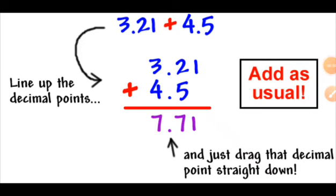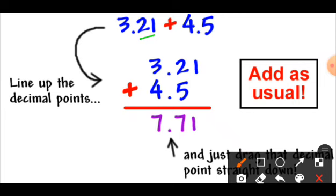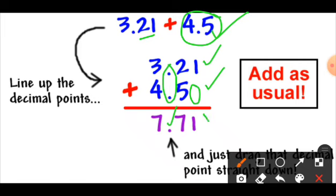Here we have another sum: 3.21 plus 4.5. In 3.21 you have 2 digits in the decimal part, and in 4.5 you have only 1 digit after the decimal point. So you introduce a zero to make it 4.50, then line up the decimal points. Starting from the right: 1 plus 0 is 1, 2 plus 5 is 7, and 3 plus 4 is 7. So you get 7.71.